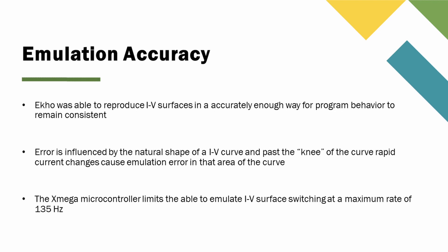Error was influenced by the natural shape of the IV curve. When past the knee of the curve, rapid curve changes cause emulation error specifically in that area, and this was the main error encountered by ECHO. The Xmega microcontroller also limits the ability to emulate IV surfaces because of the switching speed of only 135 Hz. Additionally, limitations in the size of the RAM cause switching speed to be lowered. Potential improvements point towards using a faster and larger type of RAM or a faster hardware bus instead of the current software bus. ECHO's prototype is primarily limited by hardware restrictions, which can be overcome by using more expensive and available parts.